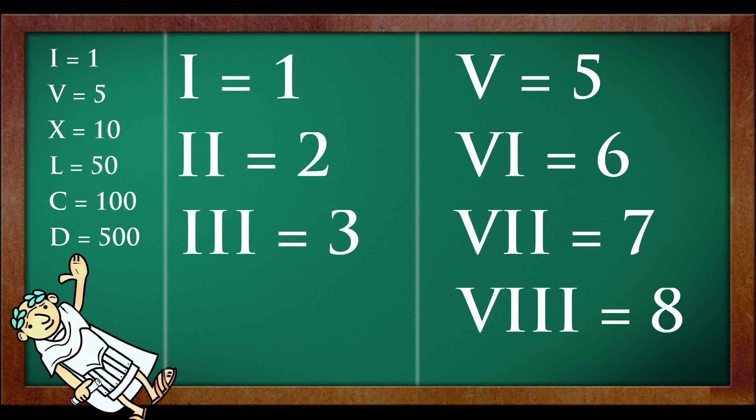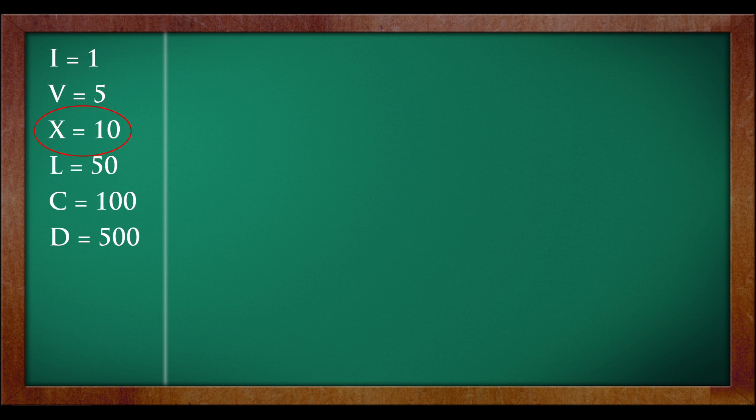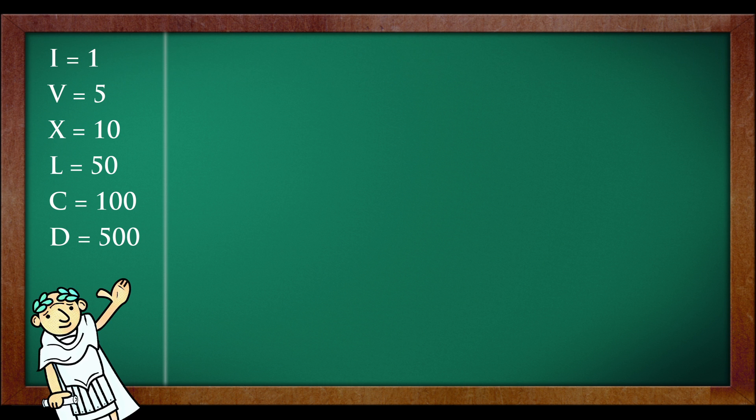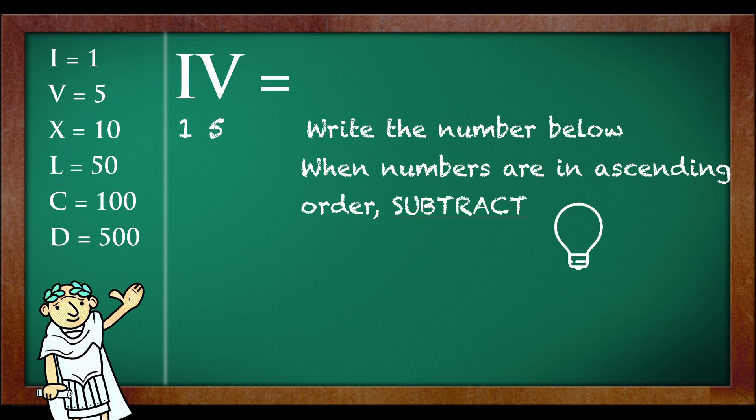Now let's skip 9. From the table, you know X is equal to 10. Now 4 and 9 are very interesting. I'll tell you why 4 is written as IV. So first write the numbers below, 1 and 5. Then after that, when you see it in ascending order, subtract. 5 minus 1 is equal to 4. That's why IV is called as 4.